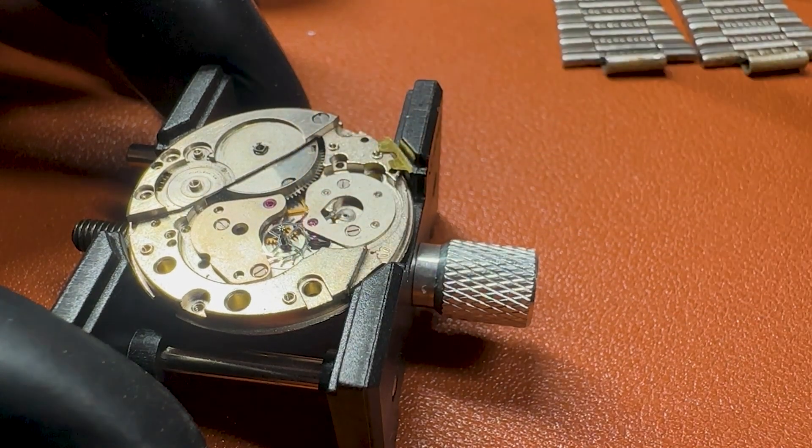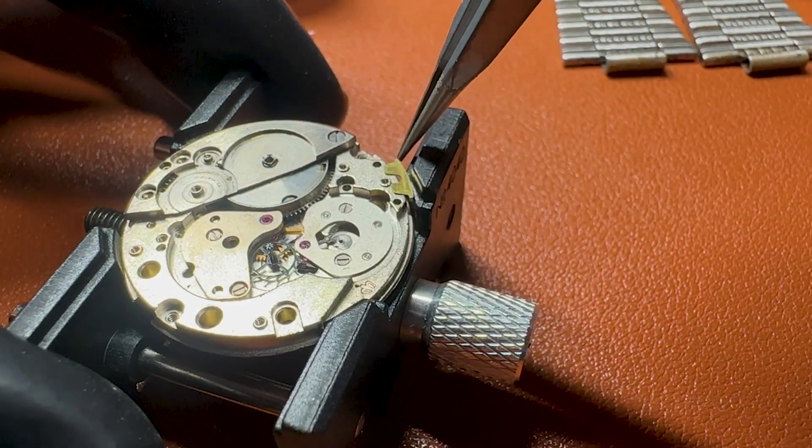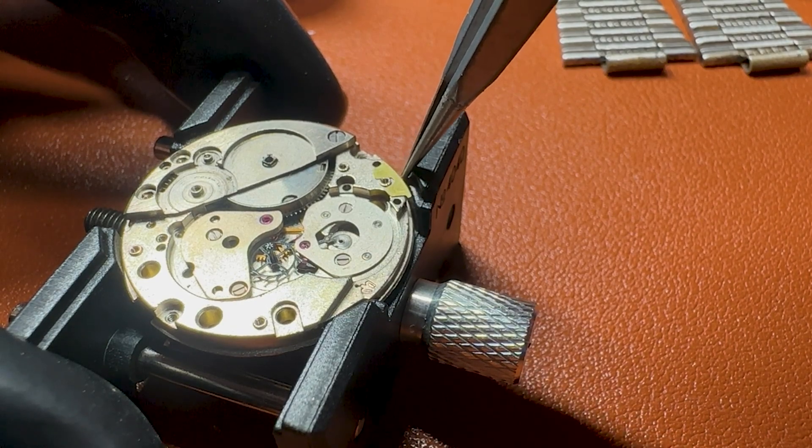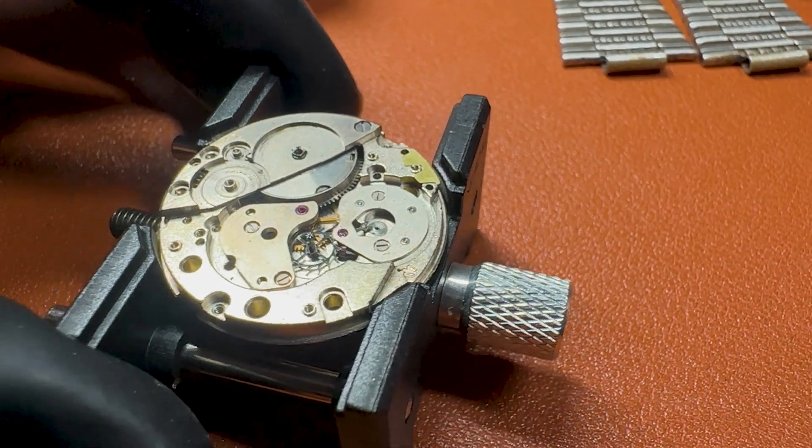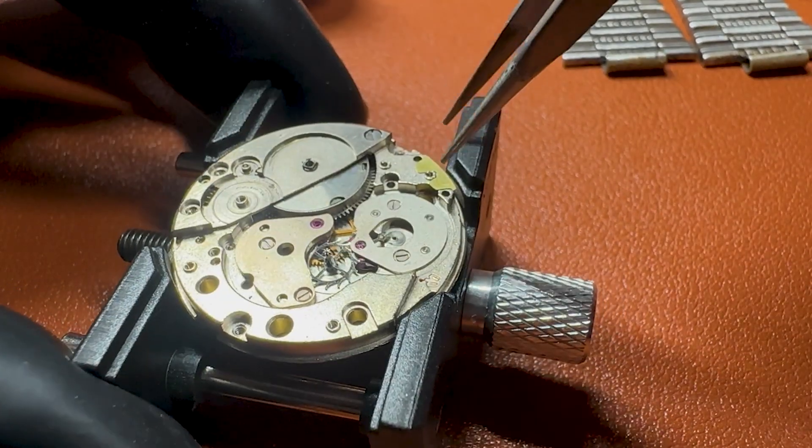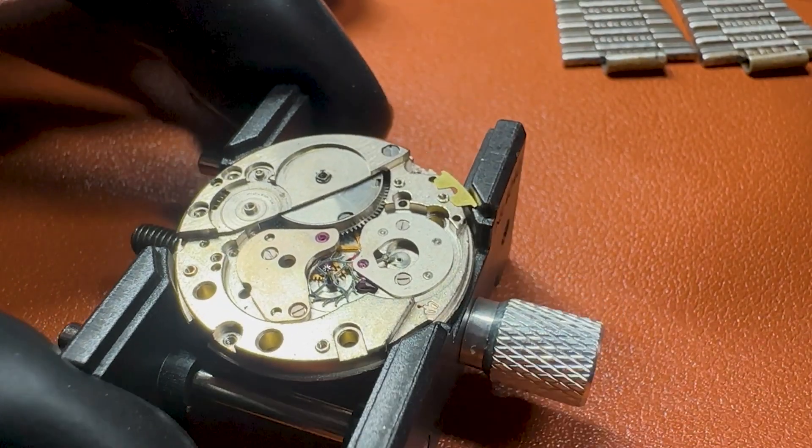Here we have a thin metal that is raising the balance wheel a little bit. The escapement wheel.